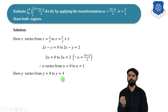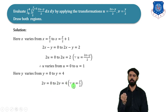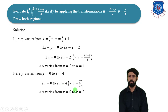Here y varies from y = 0 to y = 4. Since v = y/2, we get 2v = 0 to 2v = 4, so y = 2v. Therefore, v varies from v = 0 to v = 2.